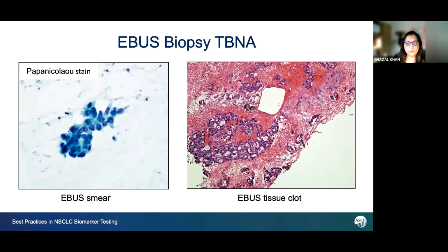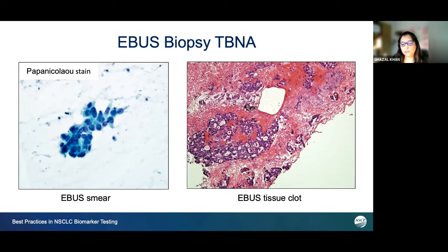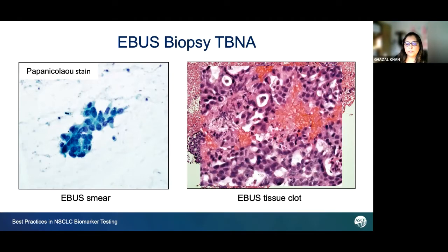You can see the difference between these two: this is the smear, and this is the Papanicolaou stain. When the slide is stained after bringing back to the laboratory, enough diagnostic tissue is present — but more than that is actually present on our tissue clot, and this is going to be a really beautiful specimen for our molecular pathology testing. Here is a closer view of the same.